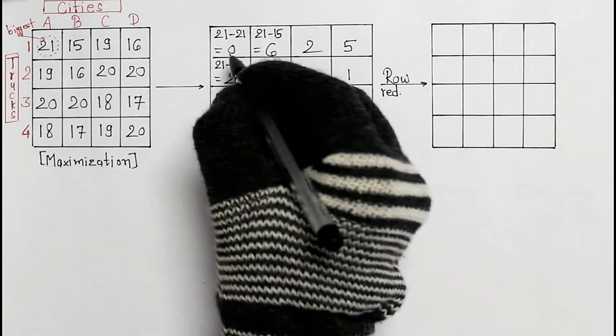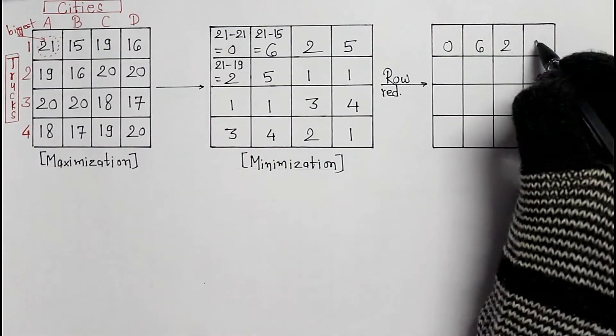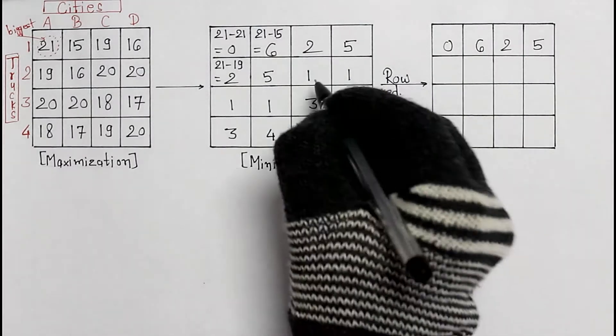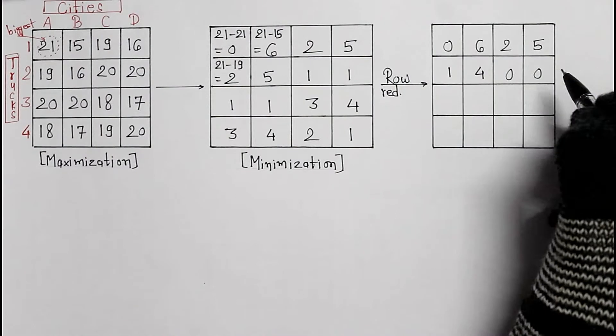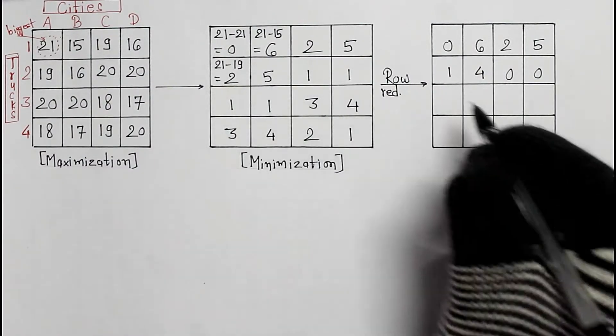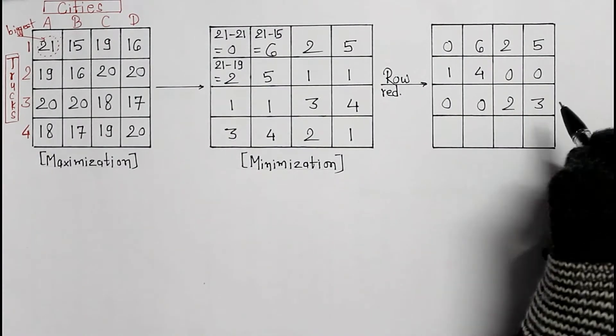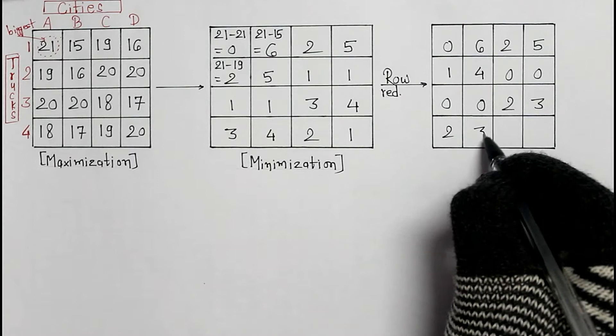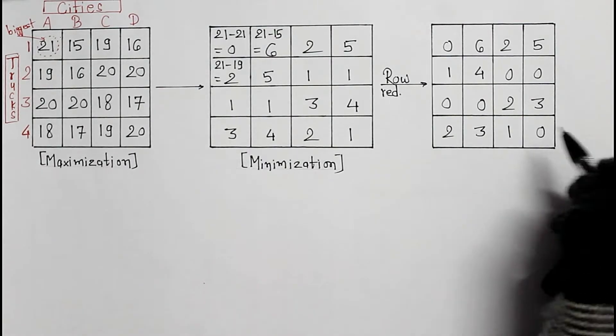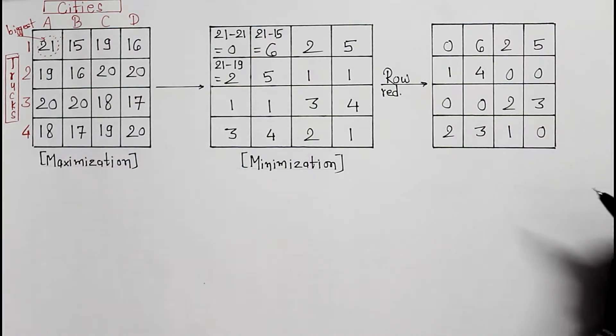In the first row, 0 is minimum. Here 1 is minimum. Here also 1. And here 1 is minimum. Now each column has one 0 element, so column reduction is not needed here.